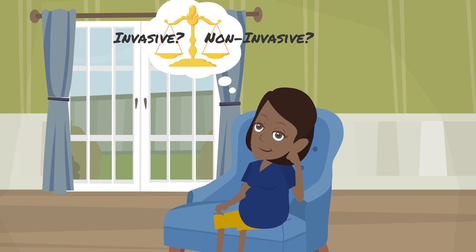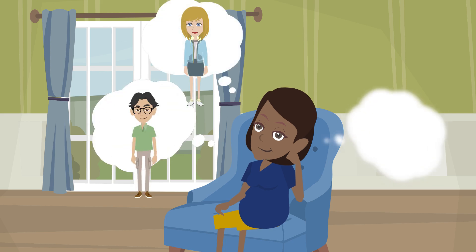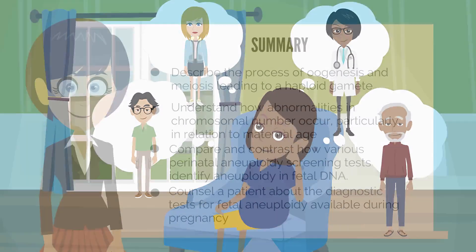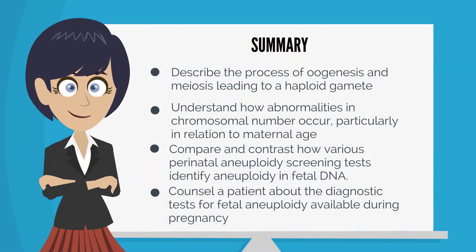Anna Marie is considering her options, and given her gestational age, has time to think about what would be best for her. She may also desire to speak with family, friends, a genetic counselor, and her physician again to help her make a decision. This concludes the APCO Basic Science video on abnormal genetic or aneuploid screening. You should be able to describe the process for meiosis, understand how chromosomal abnormalities occur, and compare and contrast between diagnostic and screening tests for aneuploidy.